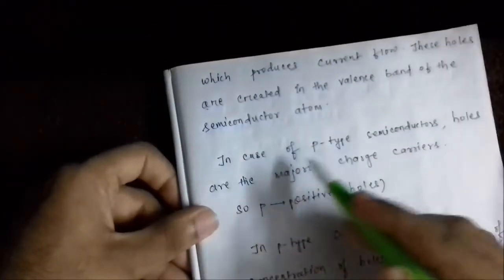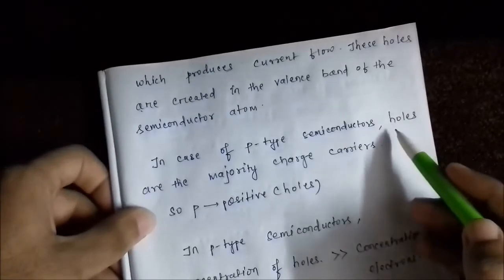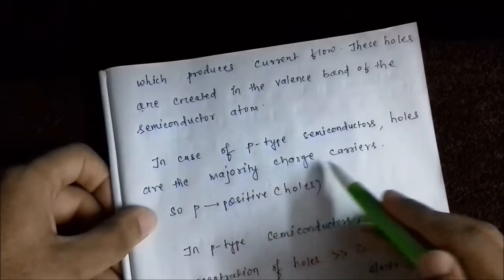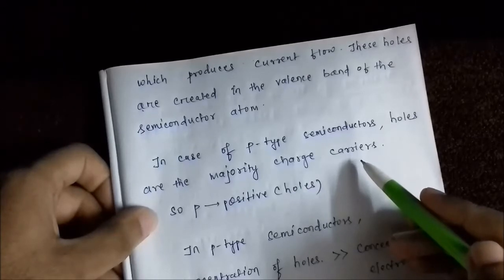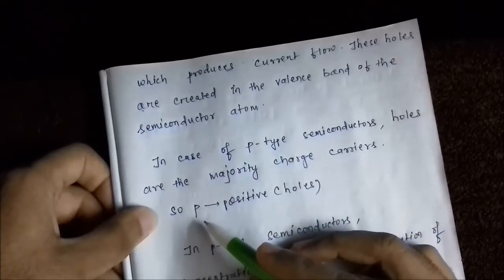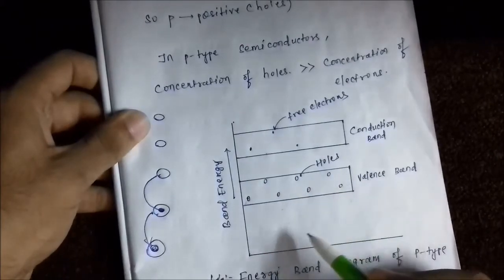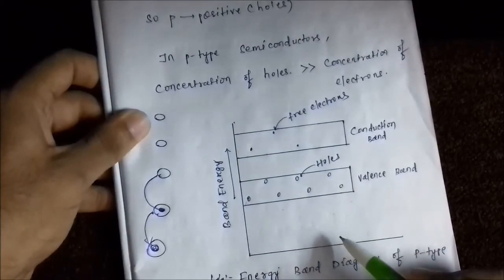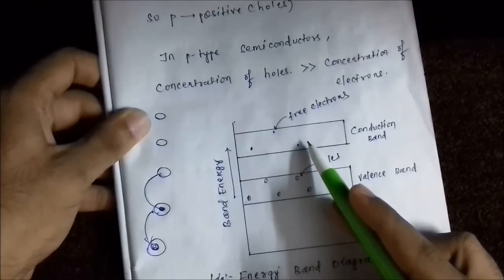In P-type semiconductors, the vacant electron spaces or holes are the majority charge carriers. The absence or deficiency of an electron causes the semiconductor to acquire a positive charge, so the 'P' in P-type extrinsic semiconductor stands for positive. Here is the energy band diagram of P-type semiconductors — more number of holes in the valence band and fewer electrons in the conduction band.